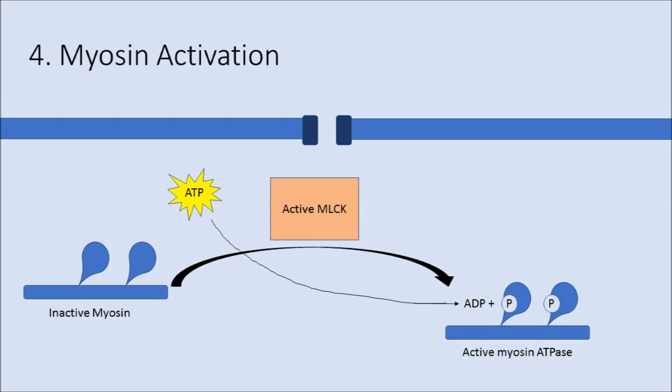This myosin light chain kinase then goes on to phosphorylate the light chain of the myosin heads. There's the inactive myosin and then ATP is used in the phosphorylation of this myosin to make it active.